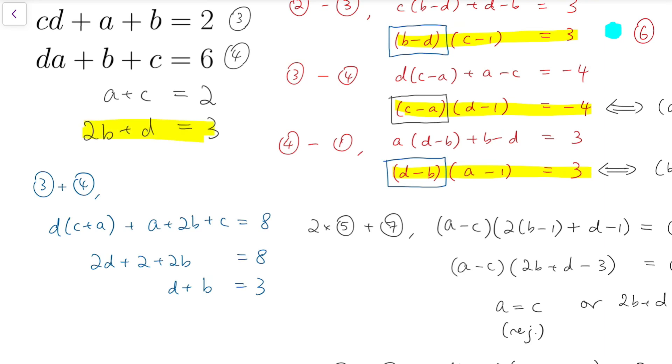Then we can solve these two equations, which is very simple because it's just two equations in two unknowns. And so we can solve that. And we have b equals 0 and d equals 3.